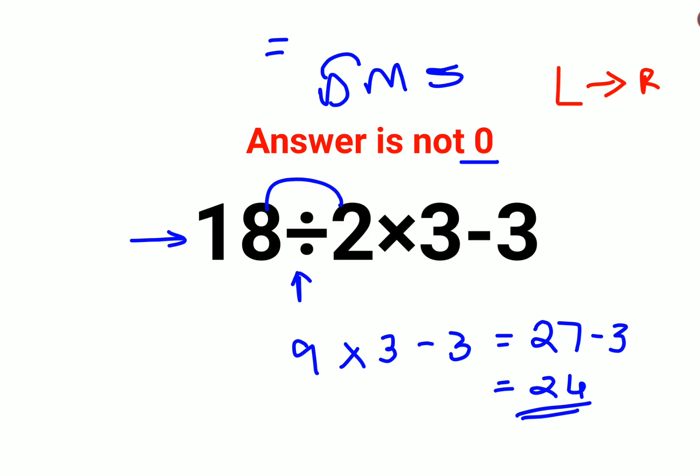So I hope you have understood why the answer for this one is not 0. Now you might be wondering, then when is the scenario when it will get you a 0? It will be something like this: 18 divided by 2 times 3 minus 3.